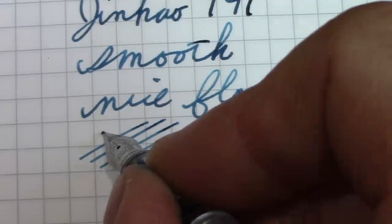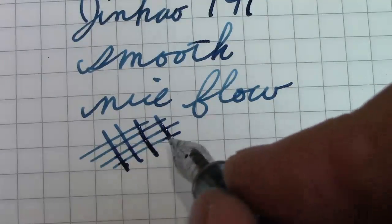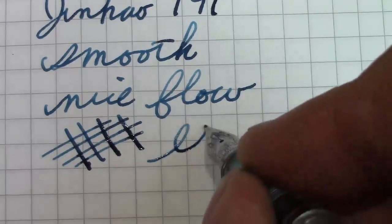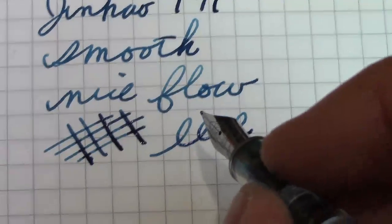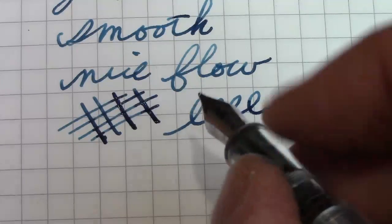So this does write as well as a 992. It is the same nib and feed, so you would expect that. Yeah, you put a little pressure on you, a little bit more ink flow. And it does open up a little bit. I wouldn't call this a soft nib or anything like that. But it is pleasant to write with. I haven't done anything. I think with a little bit of smoothing, this nib would be even more impressive.